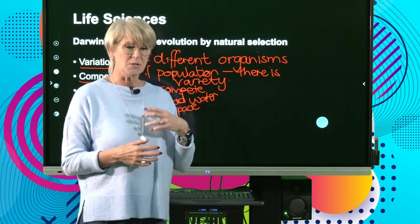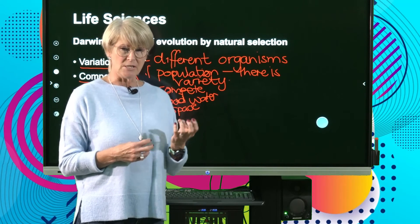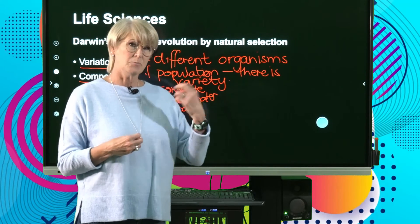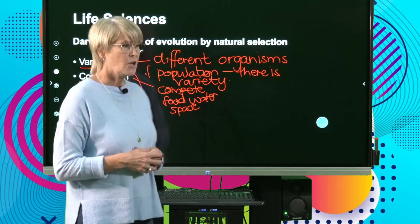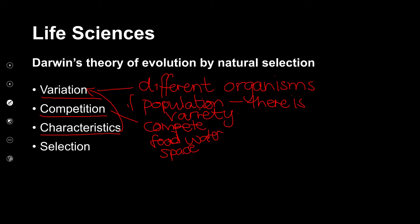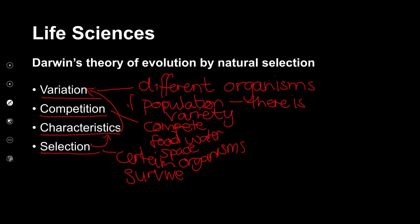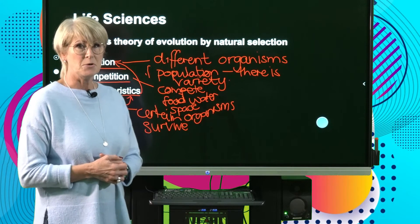He noticed that some characteristics are suitable in an environment and some are not. Then his last observation was that based on those characteristics, certain organisms survive and others don't. Those were his four observations, and he drew up his theory based on that.